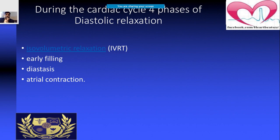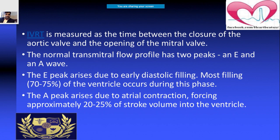There are four phases of diastolic relaxation: isovolumetric relaxation time (IVRT), early filling, diastasis, and atrial contraction. IVRT is measured as the time between closure of the aortic valve and opening of the mitral valve. During diastole, two peaks are seen across the mitral inflow: E and A. The E wave represents early diastolic filling, accounting for approximately 70–75% of ventricular filling.